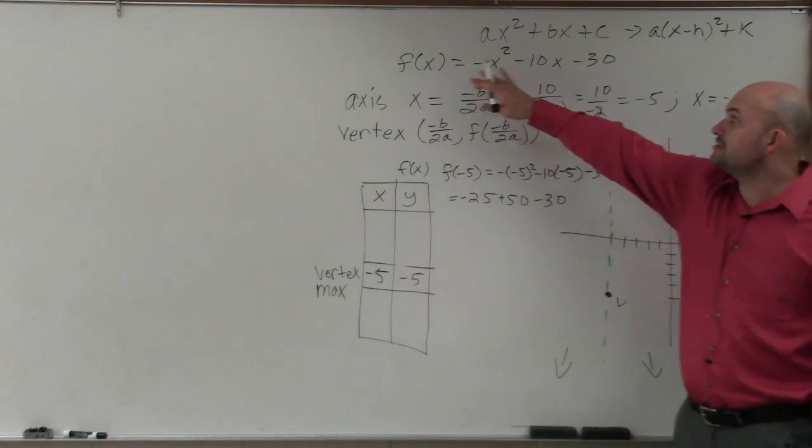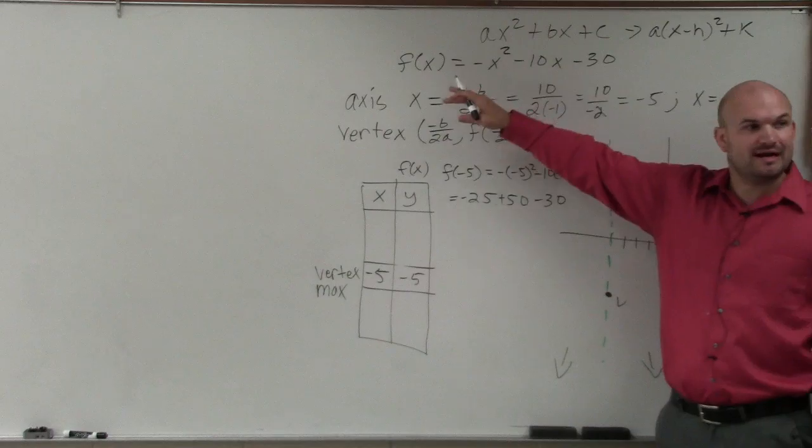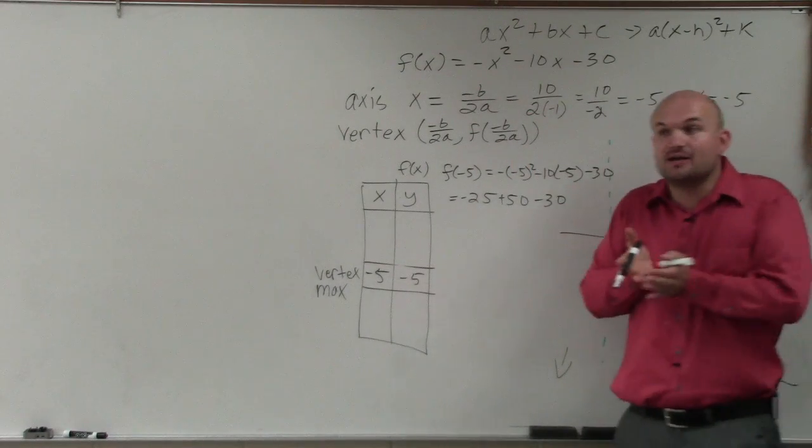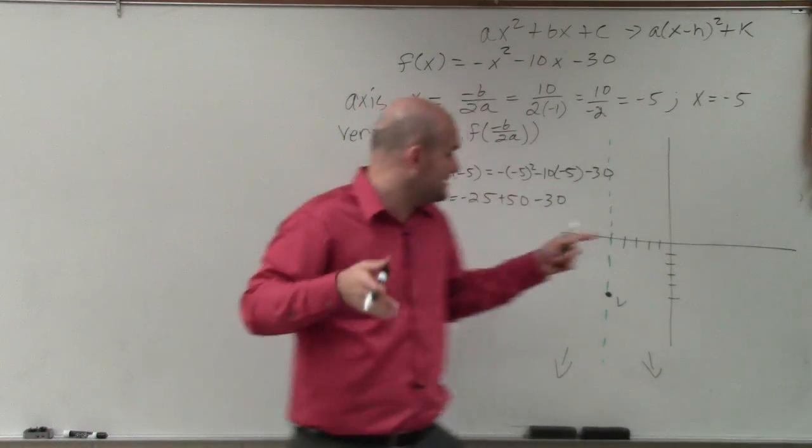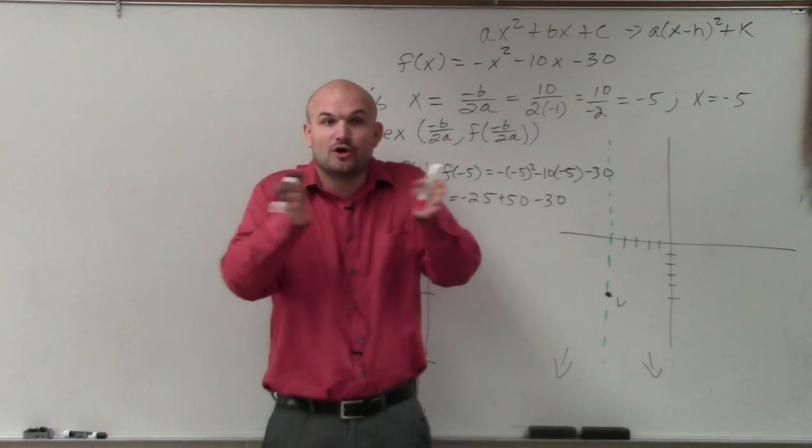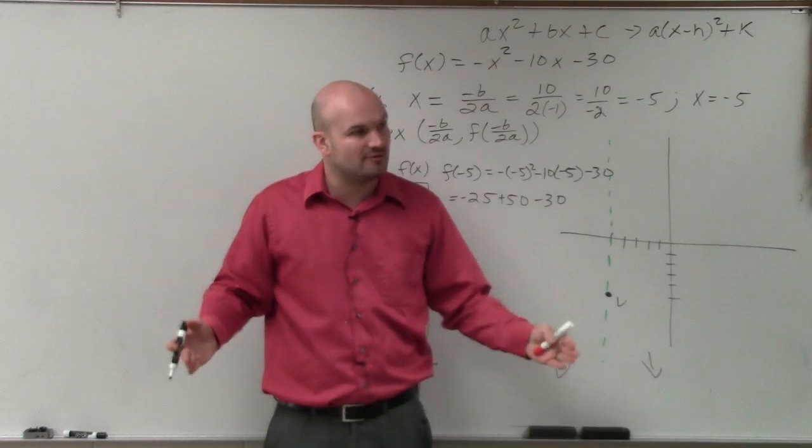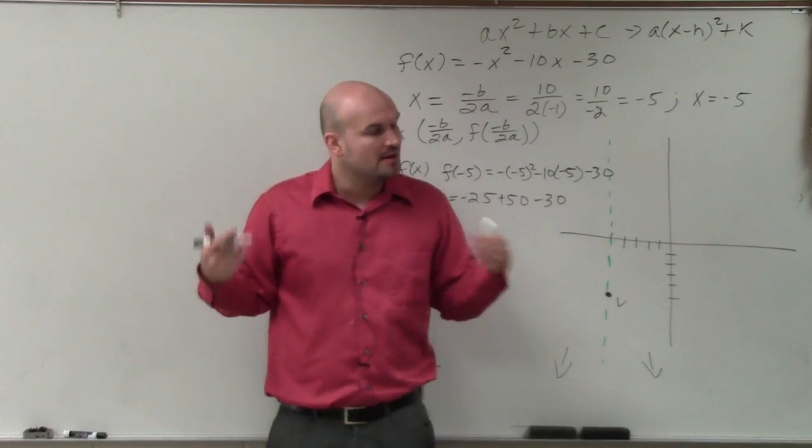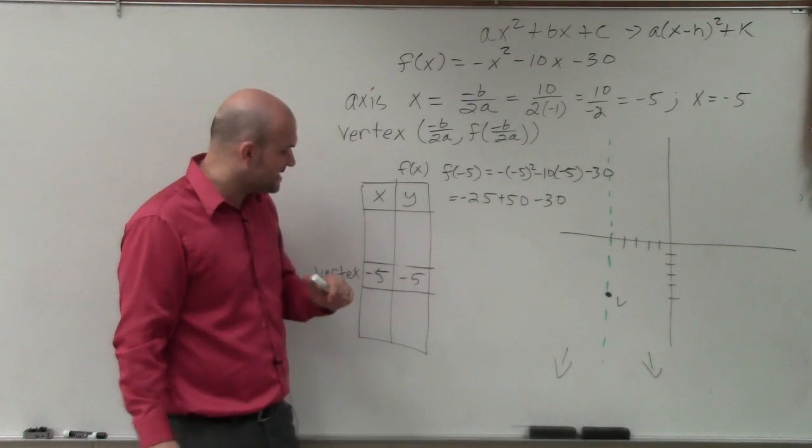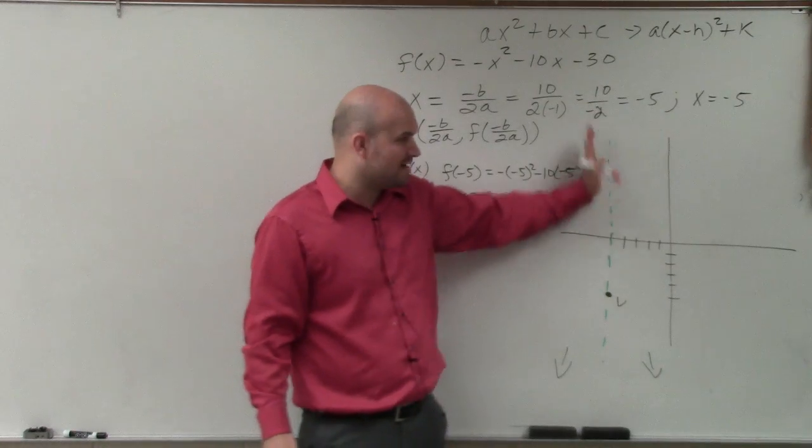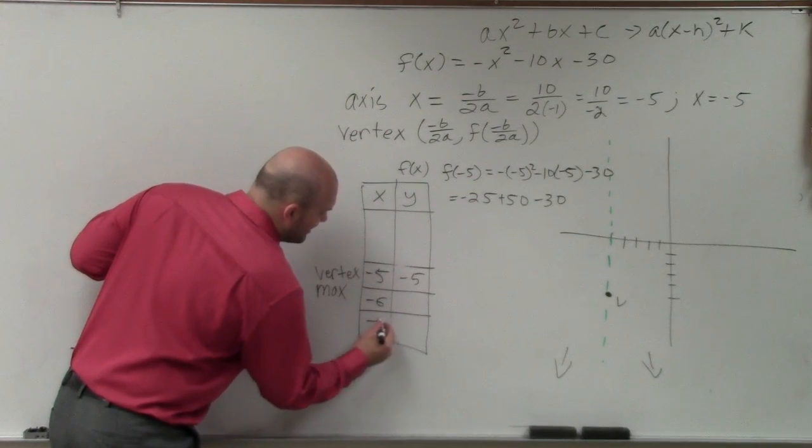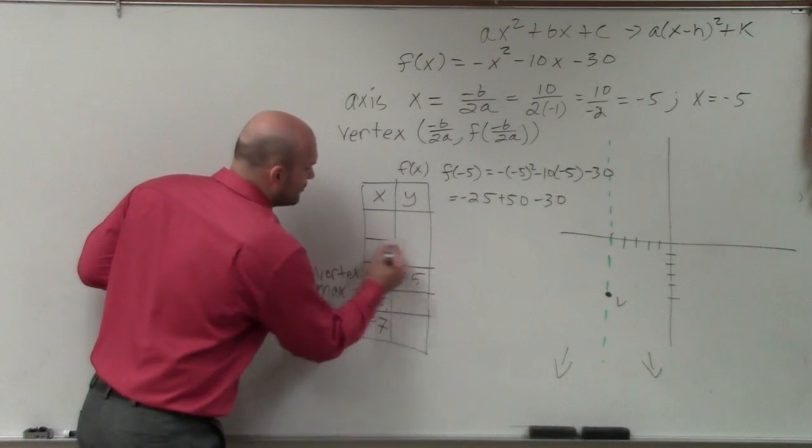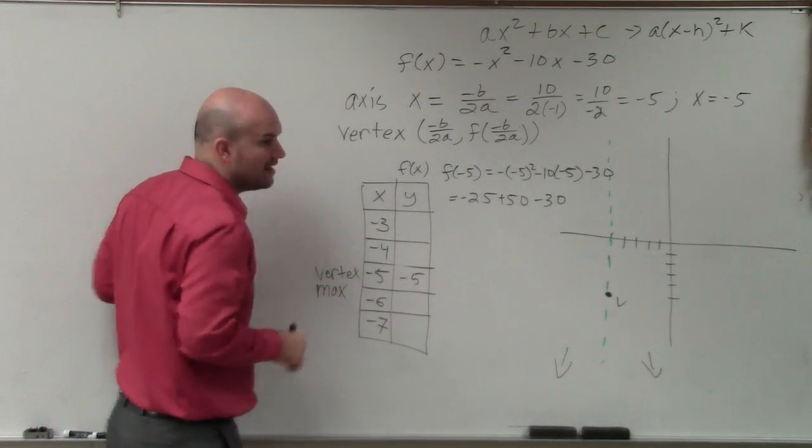Now, if you guys understand that a is 1, is there any compression or stretching? No. So in reality, if you guys remember the parent graph, you're going over 1, up 1, over 2, up 4. In this case, you're going down, so you're technically going over 1, down 1, over 2, down 4. If that doesn't make sense, the best thing that I told you guys is once we have the axis of symmetry, is just choose points to the left or to the right and then graph them.